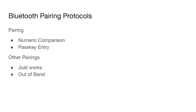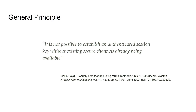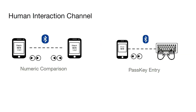Bluetooth defines two other pairing protocols called just works and out of band, but these are not considered secure because they are either vulnerable to man-in-the-middle attack or their security depends on the individual implementation. There is a general principle in protocol security: if you want to establish any authenticated connection between two parties, there has to exist a secure channel already before the new connection. In Bluetooth's case, this is the human interaction, either in the form of looking at both devices and pressing yes/no prompts, or entering the passcode.